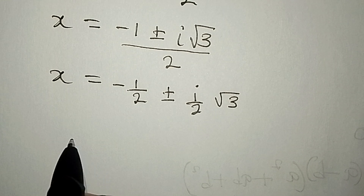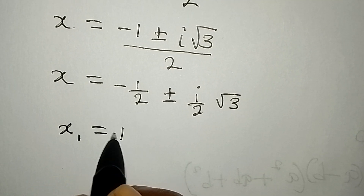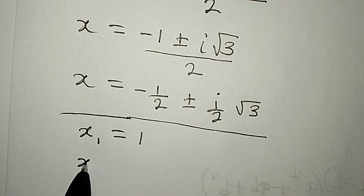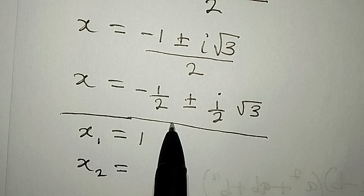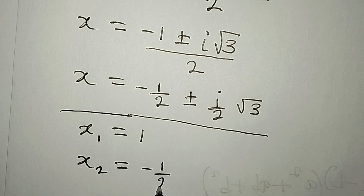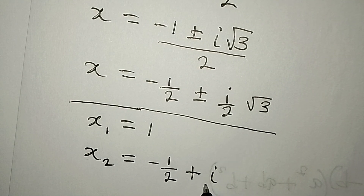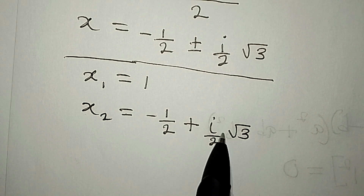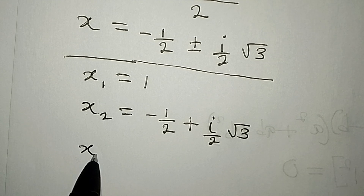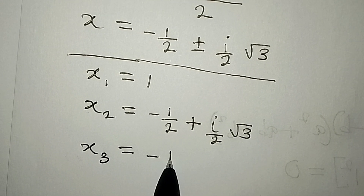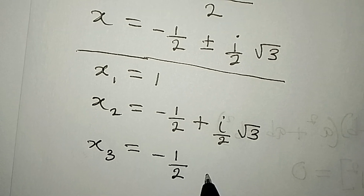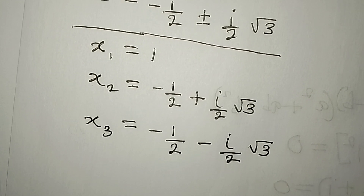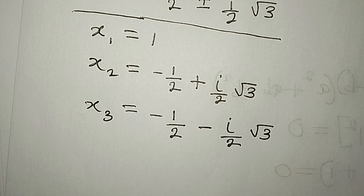So the three solutions together are: x₁ = 1 (the real solution), x₂ = -1/2 + (i√3)/2, and x₃ = -1/2 - (i√3)/2. These are all three solutions to the equation. Thank you for watching.